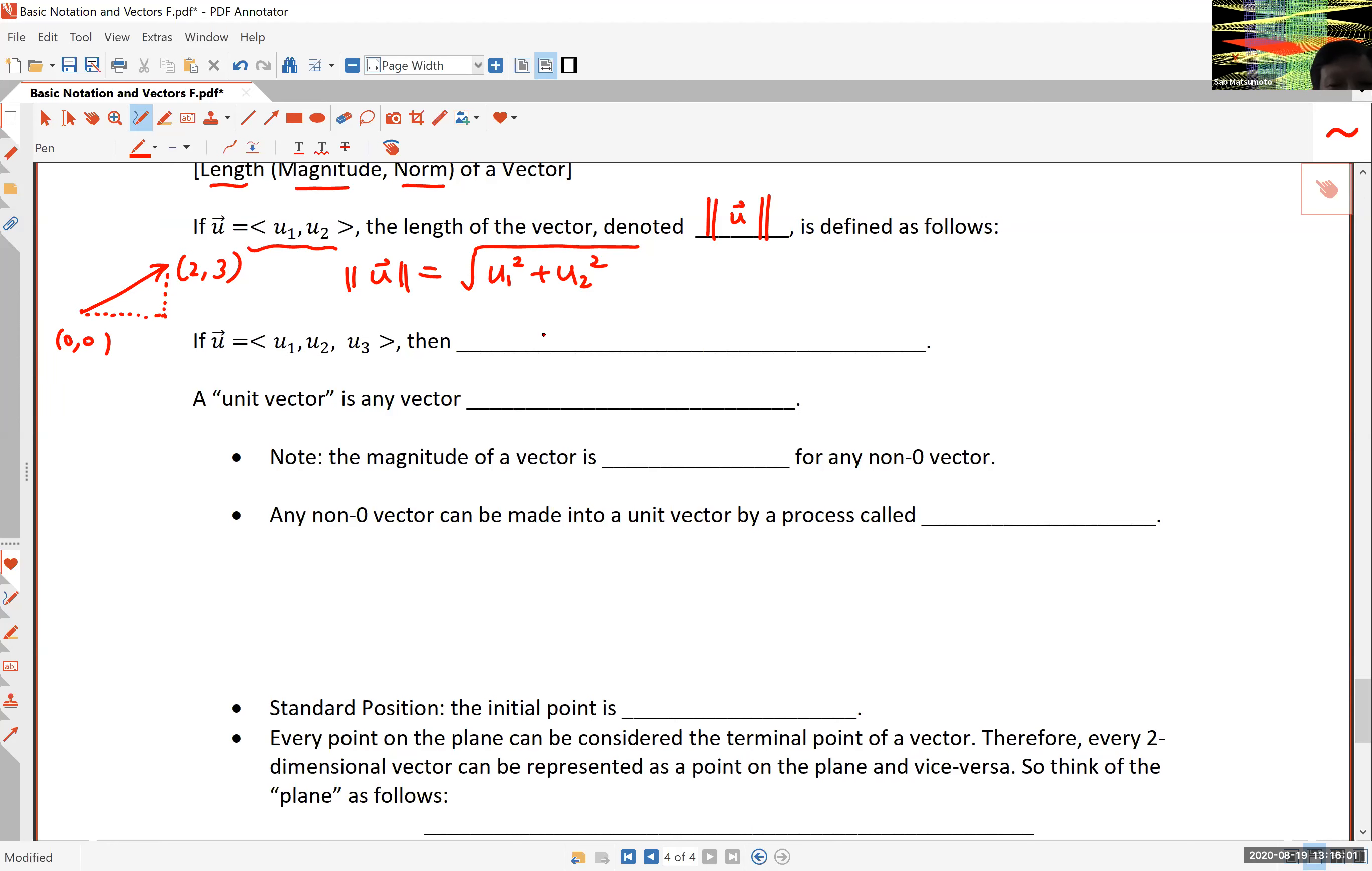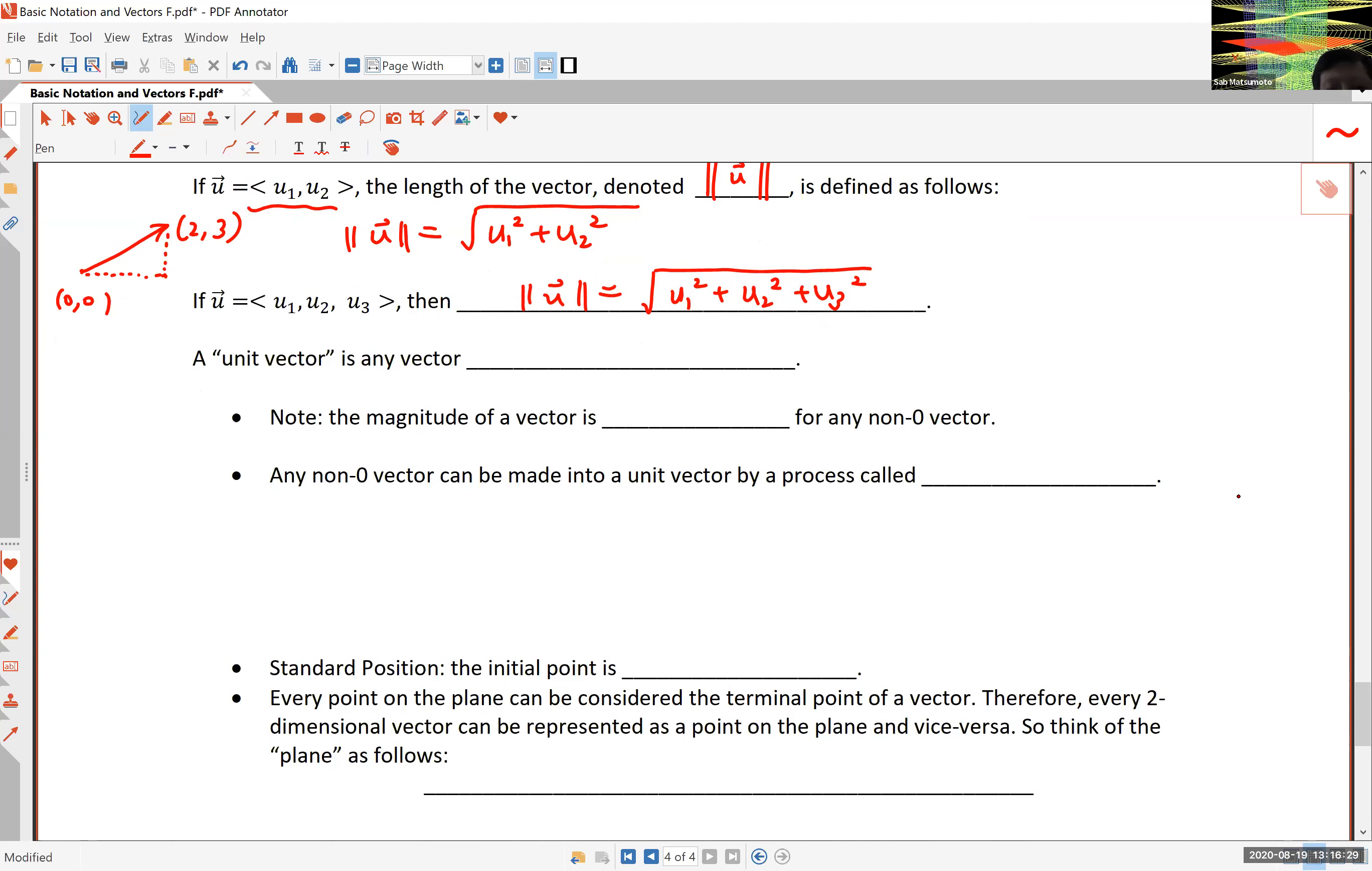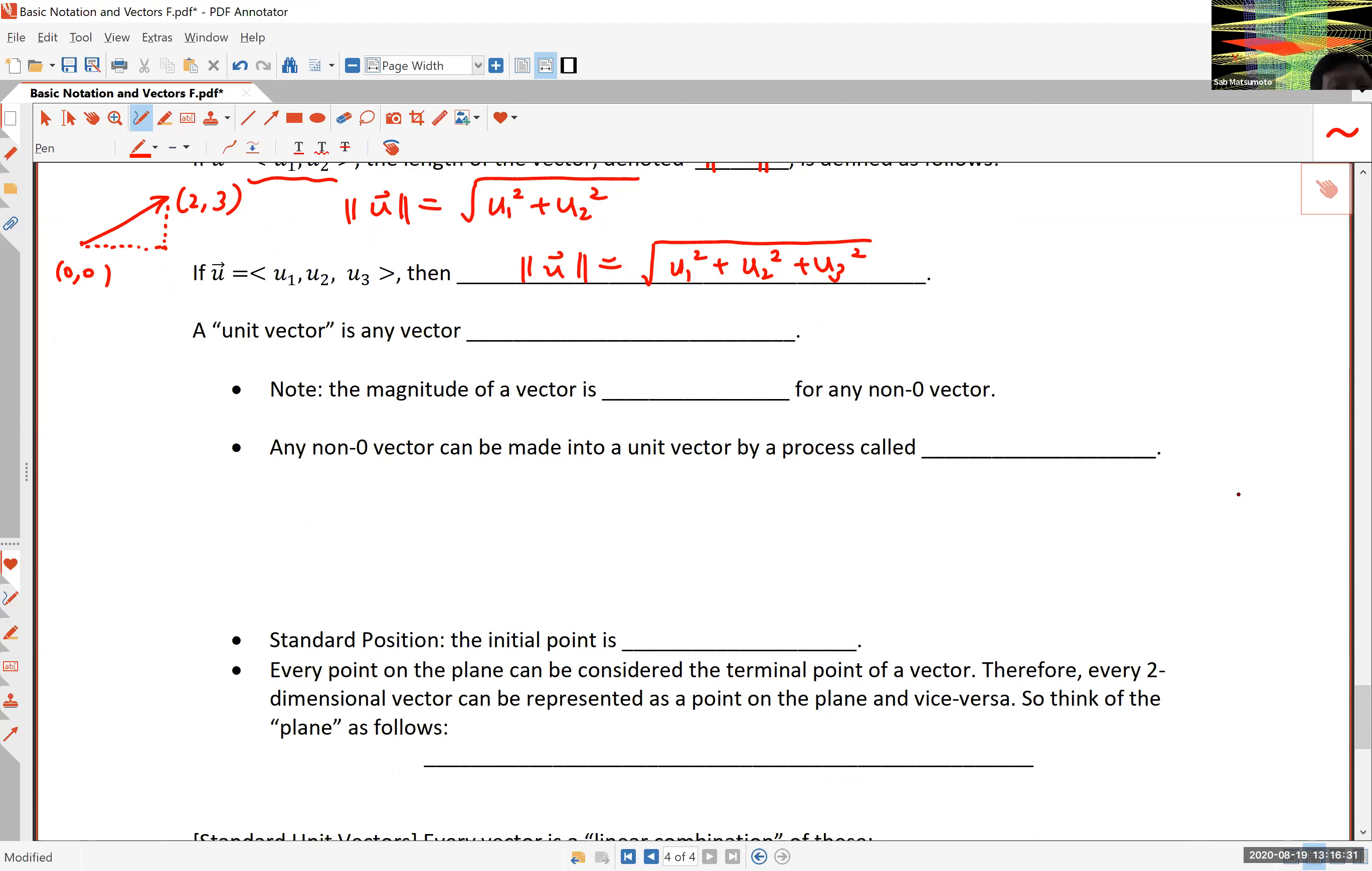If it's three dimensional, you use the three-dimensional version of the distance formula from (0,0,0) to (u₁, u₂, u₃). This is very much the same: square root of u₁ squared plus u₂ squared plus u₃ squared. Notice here, u₁, u₂, and u₃ do not have the arrow on top because those are not vectors. u₁, u₂, u₃ are real numbers and not vectors.